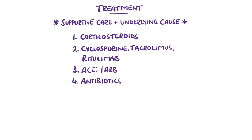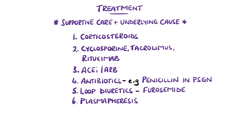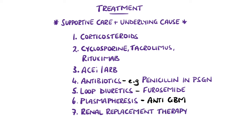Antibiotics are given to treat any suspected infections — for example, penicillin in post-streptococcal glomerulonephritis — and diuretics, mostly loop diuretics like furosemide, are used to treat fluid overload. In some cases, like anti-GBM disease, plasmapheresis is used, where blood is filtered extracorporeally to remove the causative antibodies. Patients may also require renal replacement therapy.